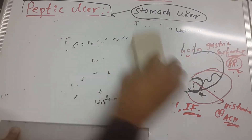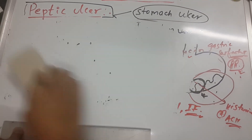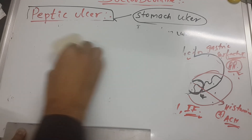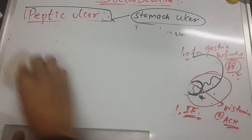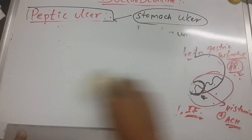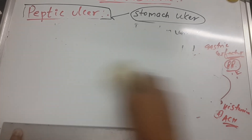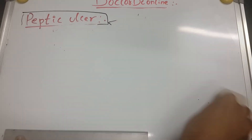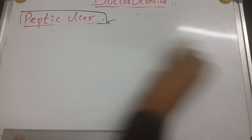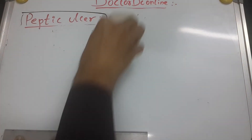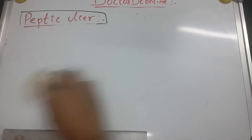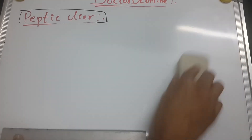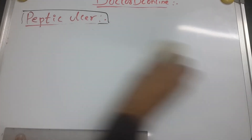This is the summary of stomach physiology and histology. In the next video, I will talk about how mucosal protection occurs in the stomach as well as in the duodenum.